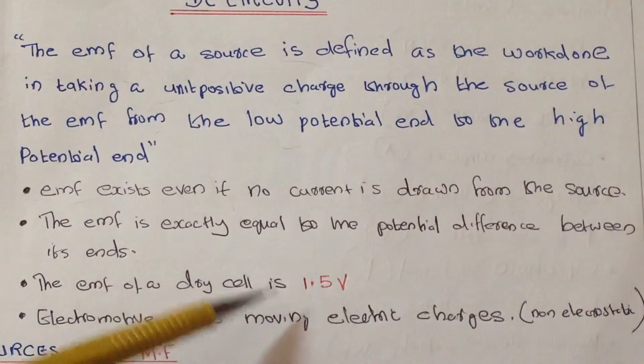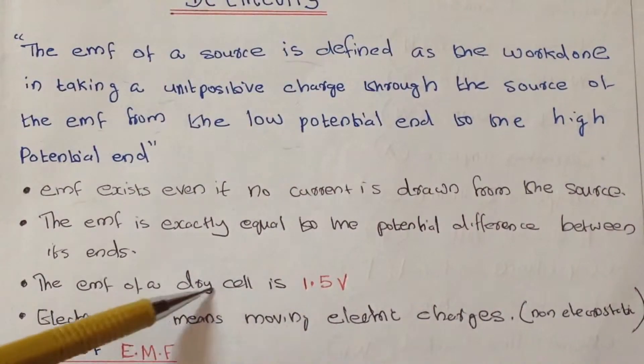The EMF of a dry cell is 1.5 volts. This can be remembered: the EMF of a dry cell is 1.5 volts.